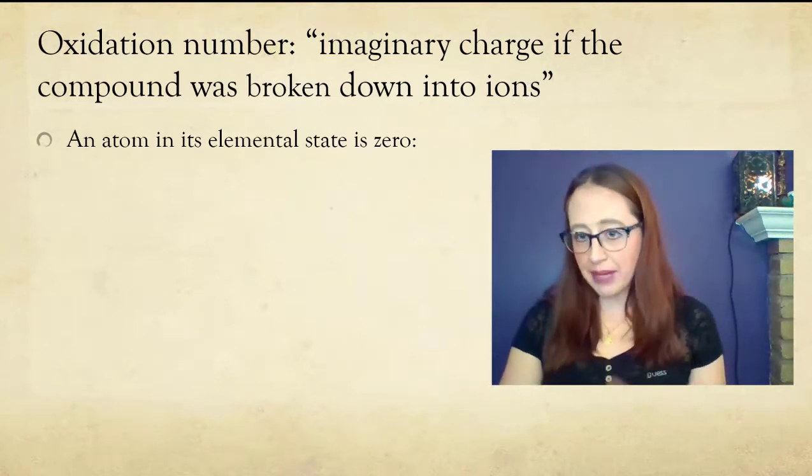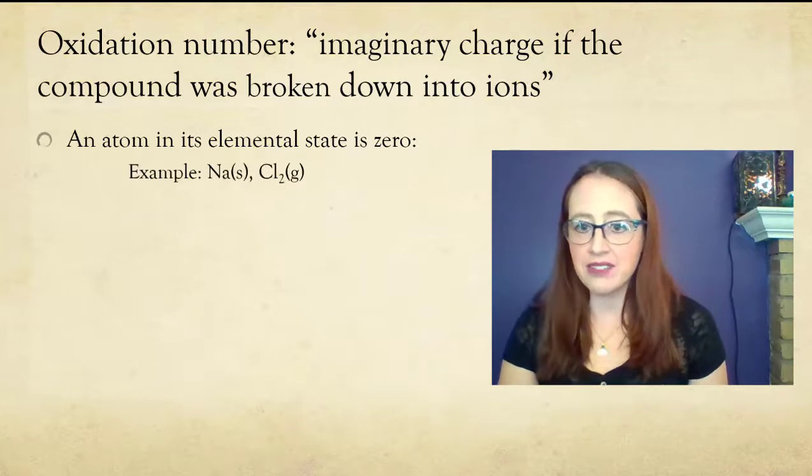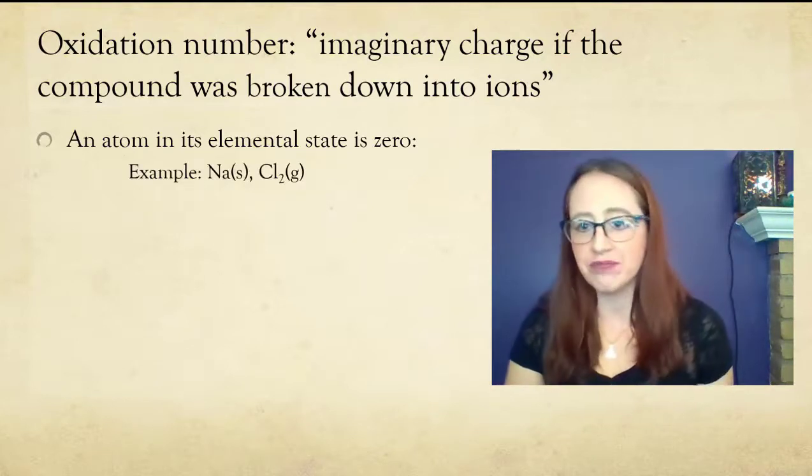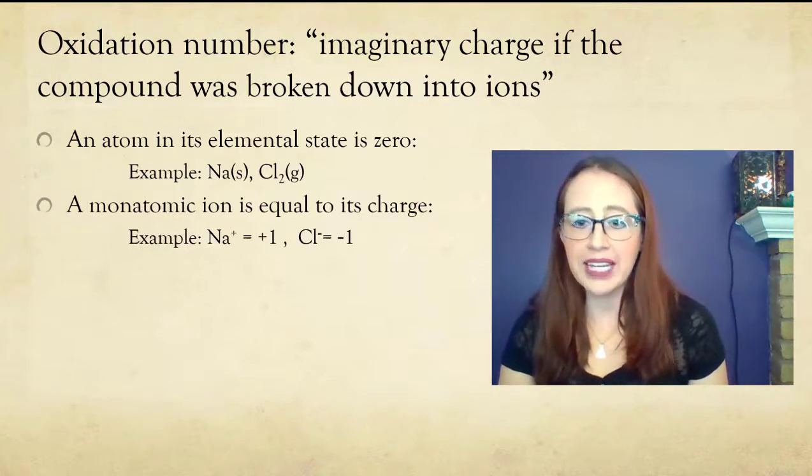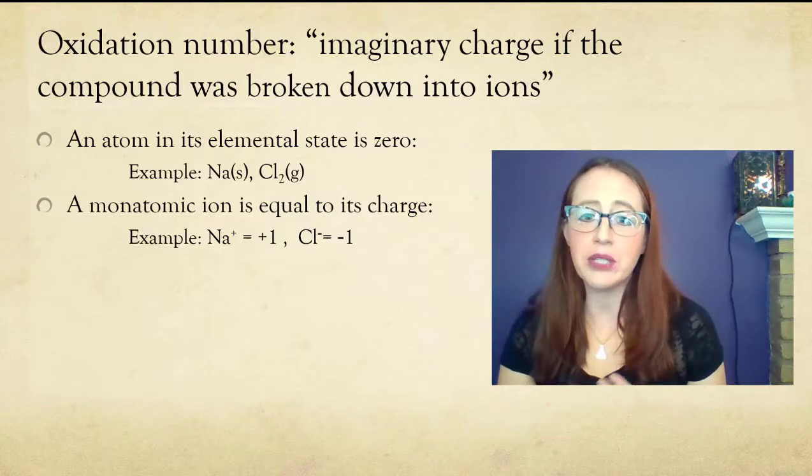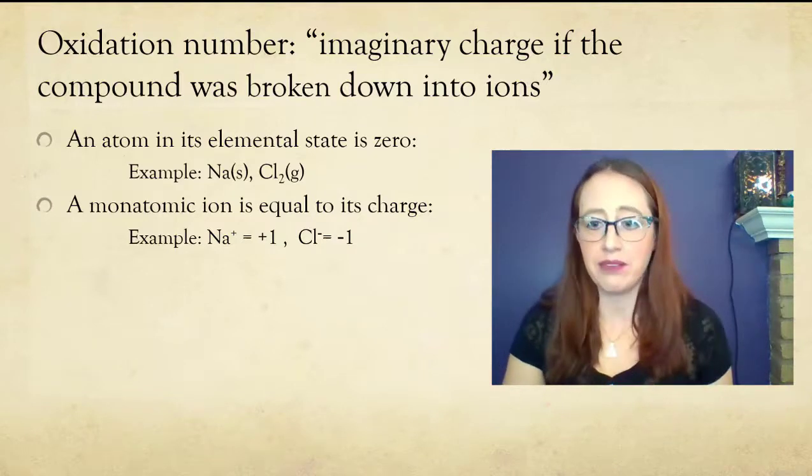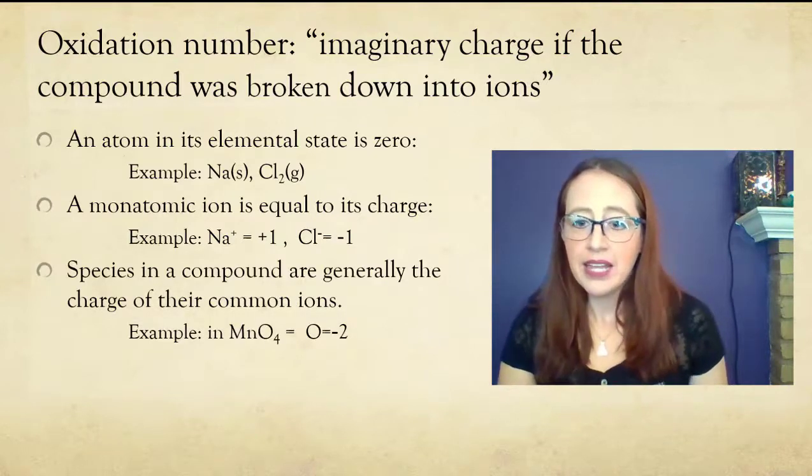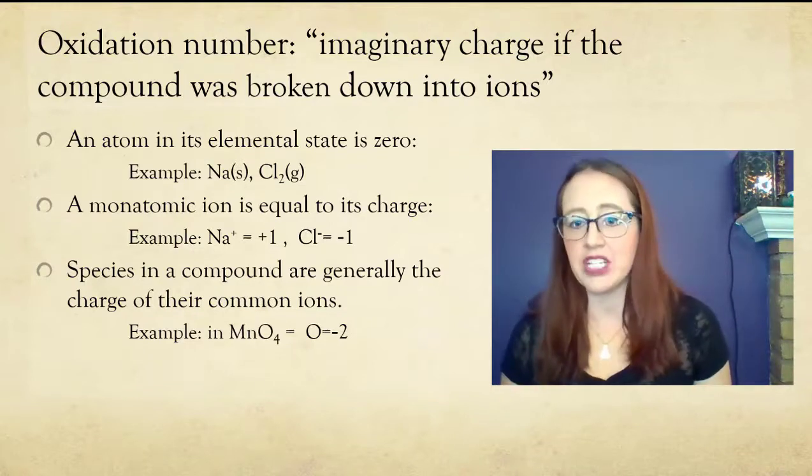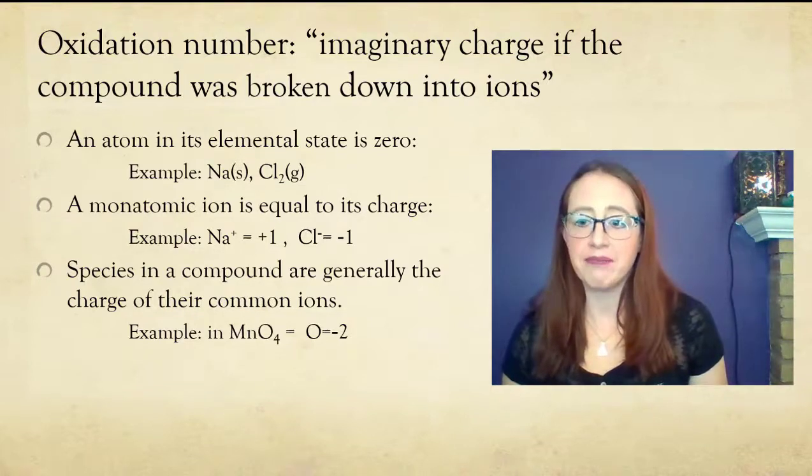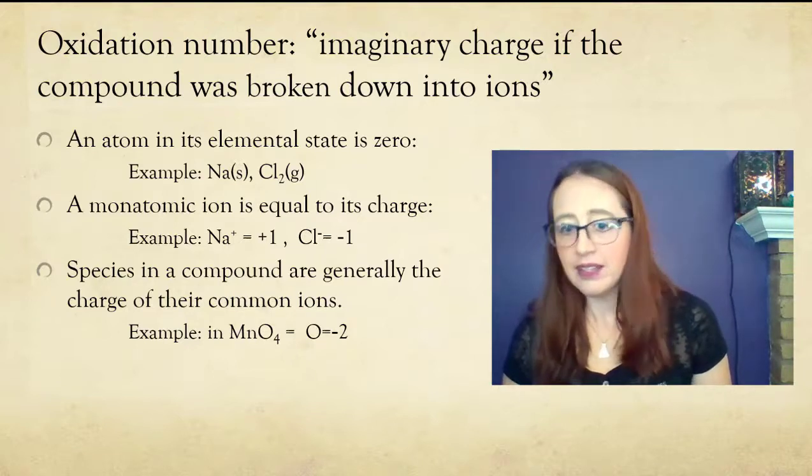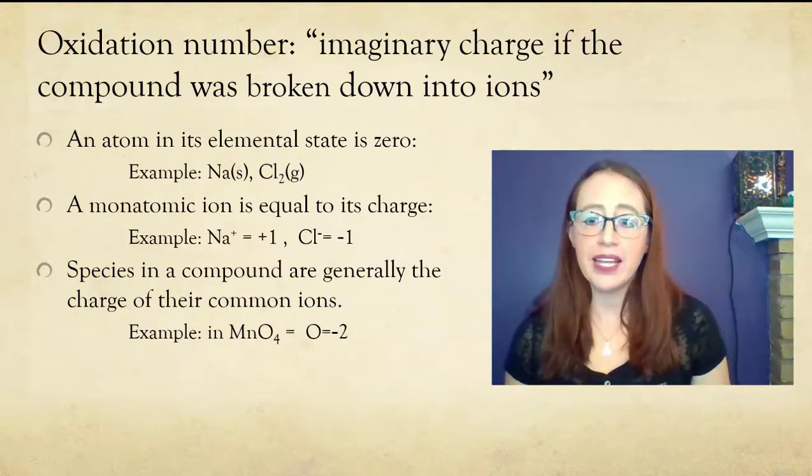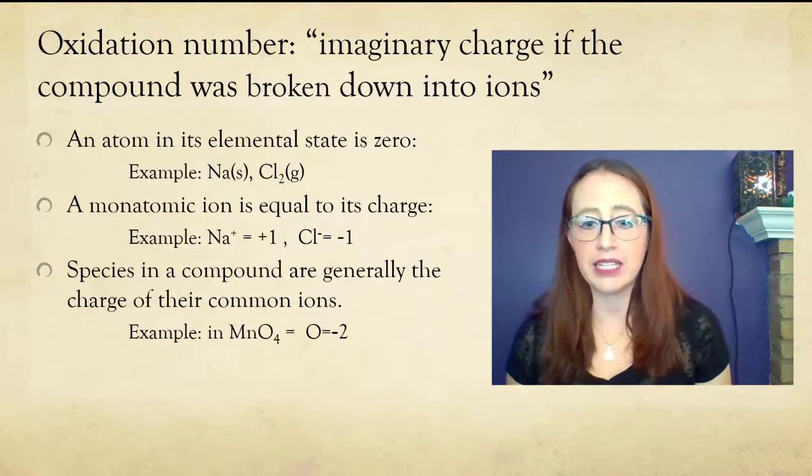If you're looking at a simple monoatomic ion, such as sodium, then its oxidation number is just the charge. If you are looking at a compound, the oxidation number is generally what you'd expect that element to form an ion with. This is a bit of an oversimplification, but it'll work for our purposes. For example, if we look at MnO4-, oxygen generally forms a negative 2 ion, and in most species it'll be a negative 2.